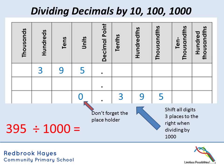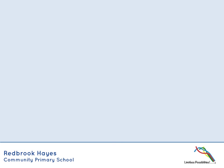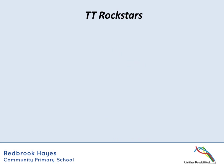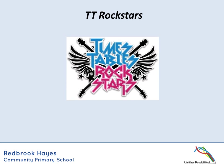Have a go at those in your packs. Draw out a place value chart in your books first and experiment with moving the digits around. Don't forget to keep going with Times Table Rock Stars and look out for any battles that might come up.